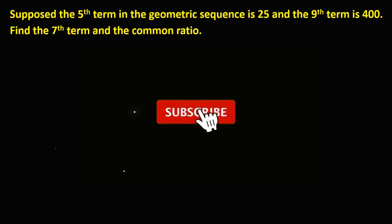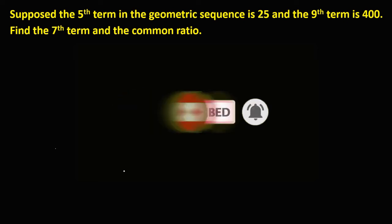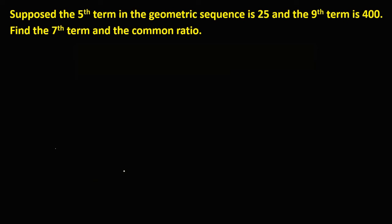Okay, so let's solve this problem. Suppose the fifth term in the geometric sequence is 25, and the ninth term is 400. Find the seventh term and the common ratio. First, we need to find the common ratio using this formula.